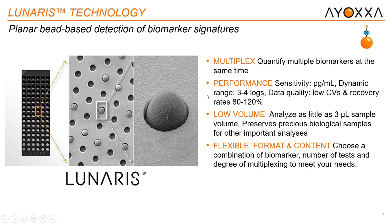More specifically, Lunaris operates on a planar bead-based detection system for multiplexing. The first image on your left is a photo of our biochip, which is the heart and soul of our technology. The biochips come in a 96-well format and can quantify up to 12 analytes in parallel depending on which kits you choose. In each well, there are approximately 10,000 micro-cavities, as shown in the middle image, that house our proprietary beads. Performance-wise, the sensitivity is as low as one picogram per milliliter with a dynamic range of three to four logs.